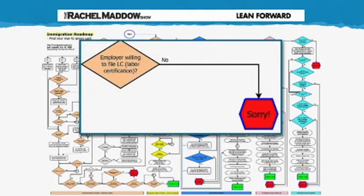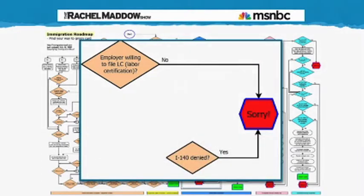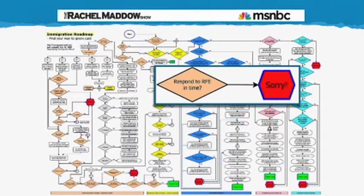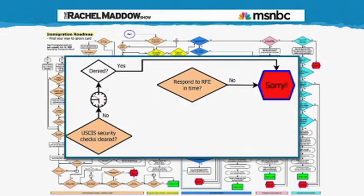Employer not willing to file LC labor certification? Sorry. I-140 denied? Sorry. Didn't respond to RFE in time? Sorry. U.S. CIS security checks denied? Sorry. All of these different things and more can all lead you to the stop sign where you fail on your attempted journey through what is now the legal immigration system in the United States.